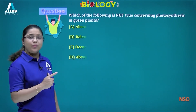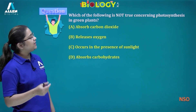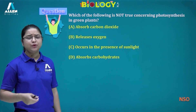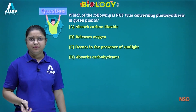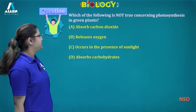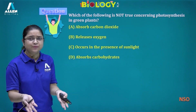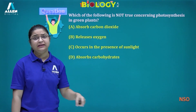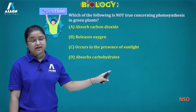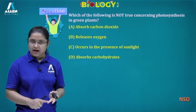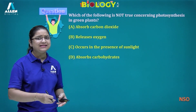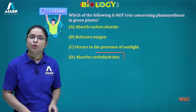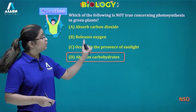Let's try a question: which of the following is NOT true concerning photosynthesis in green plants? Options: absorbs carbon dioxide — plants do absorb CO₂, so this is true. Releases oxygen — true. Occurs in the presence of sunlight — true. Absorbs carbohydrates — plants produce carbohydrates (glucose and starch), they don't absorb them. So the answer is 'absorbs carbohydrates.'